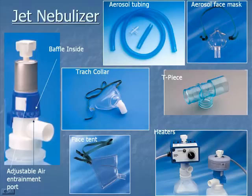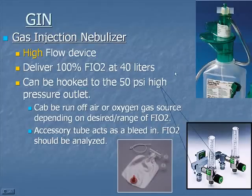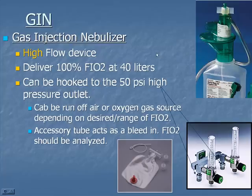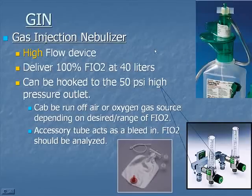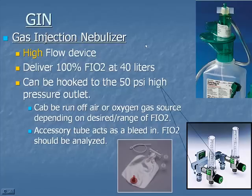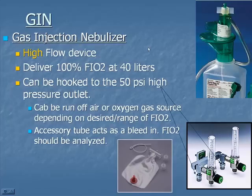That gives you a fairly good overview of your different types of devices — both low flow and high flow devices. Hopefully you now have a clear understanding of low flow versus high flow devices, when to employ each, how to calculate total flow, the concepts related to blending air and oxygen for the patient, and how flow meters work with different types of gas sources. Review this as many times as needed. That ends this session on O2 and aerosol therapy, Part 1.